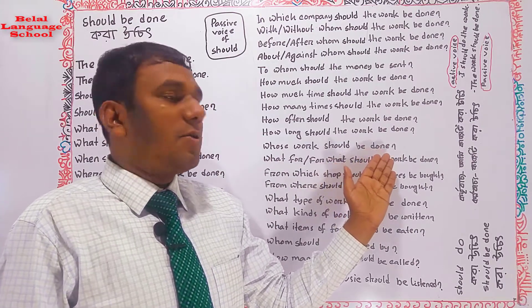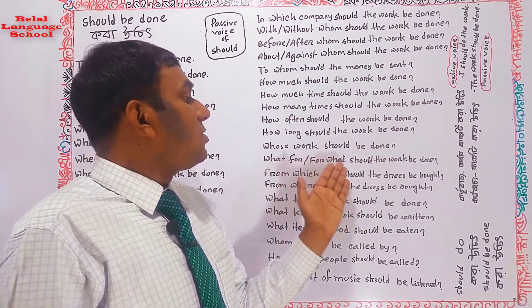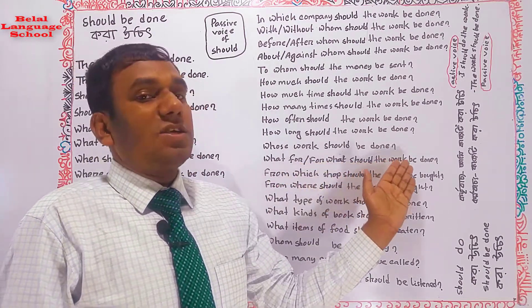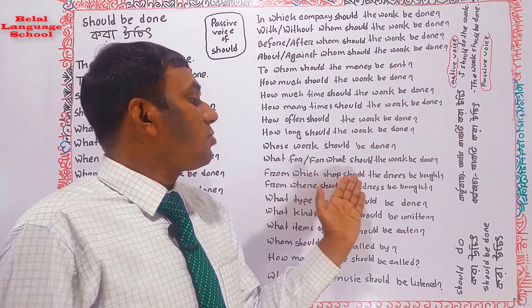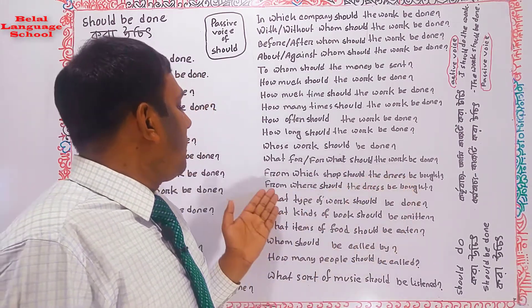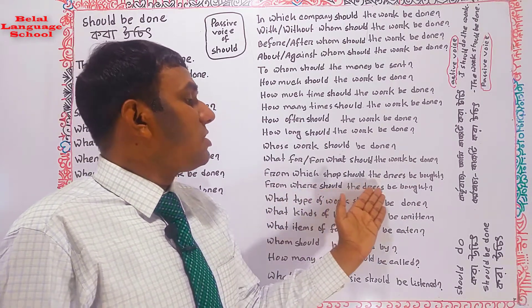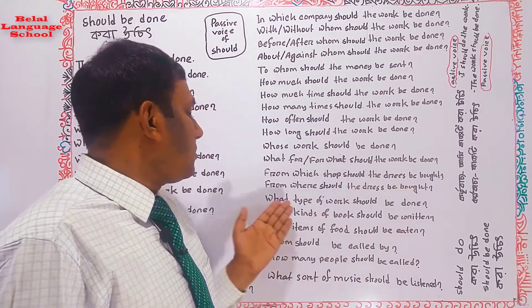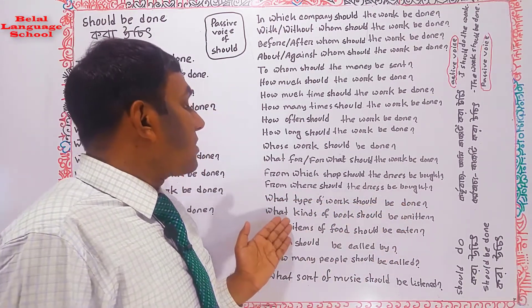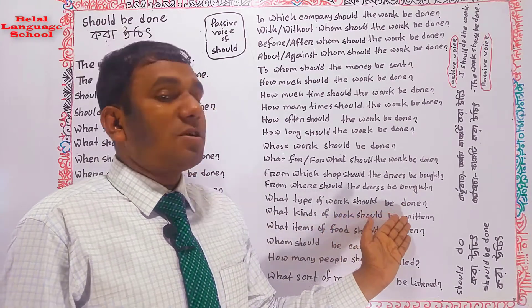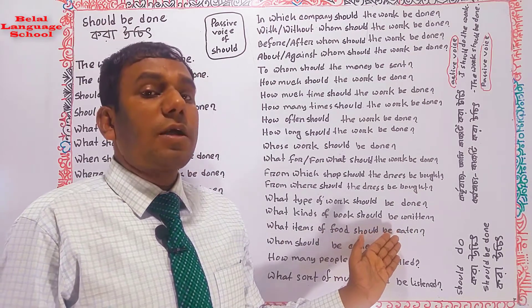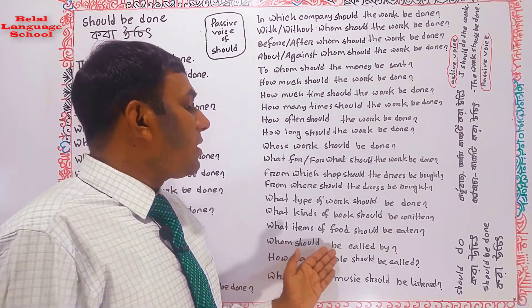Whose work should be done? What for should the work be done? For what should the work be done? From which shop should the dress be bought? From where should the dress be bought? What type of work should be done? What kinds of work should be written? What items of food should be eaten? What should the work be done?